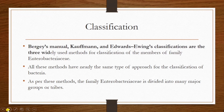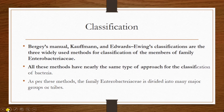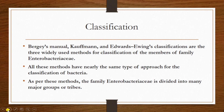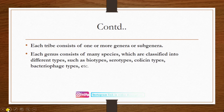Enterobacteriaceae are classified into different tribes. Bergey's Manual, Kaufmann, and Edwards-Ewing classifications are the three widely used methods for classifying members of the family, and all three have nearly the same approach. They classify Enterobacteriaceae into eight different tribes, each tribe consisting of one or more subgenera or genera. Each genus consists of many species classified into different types such as biotypes, serotypes, colicin types, and bacteriophage types.